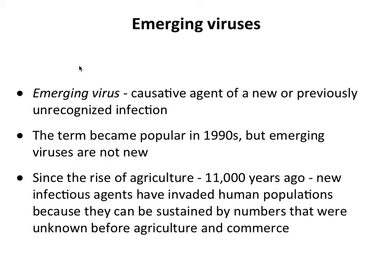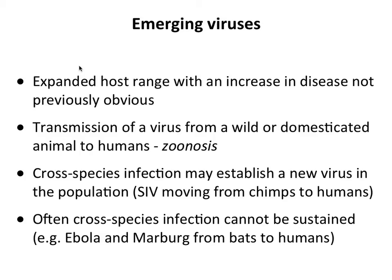Ever since we started doing agriculture and large populations of people began to congregate, we picked up new viruses. Before there were large numbers of people together, there wasn't enough to sustain transmission, but as soon as we got together that happened, and viruses have been infecting us ever since. An emerging virus can have an expanded host range — chikungunya virus is an example where the host range was limited to a certain mosquito, then a mutation allowed it to replicate in a new mosquito.